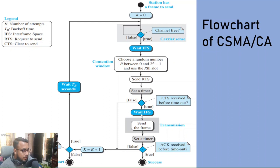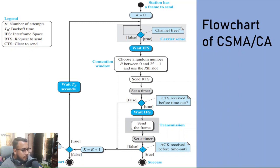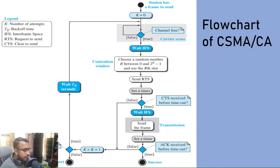Once the CTS is received — meaning the result is true — we wait for another IFS, then the frame is sent. A direct timer is set, and we wait to receive the acknowledgement message. Once the acknowledgement is received, that means our data was successfully transmitted.